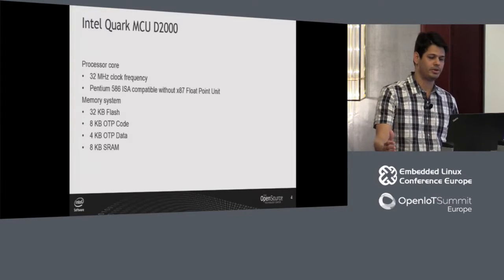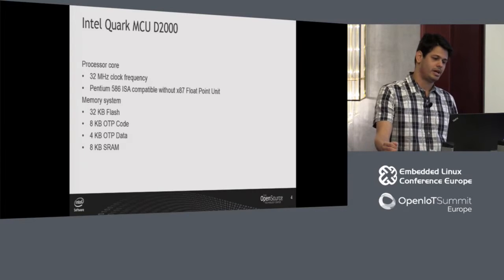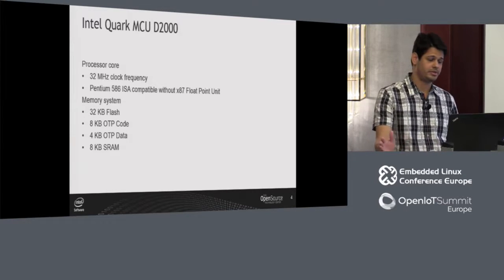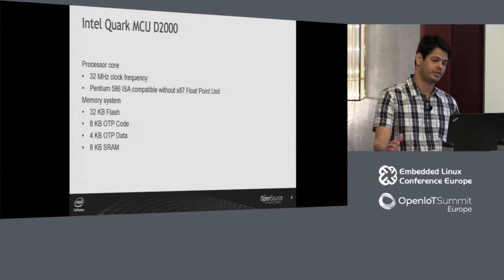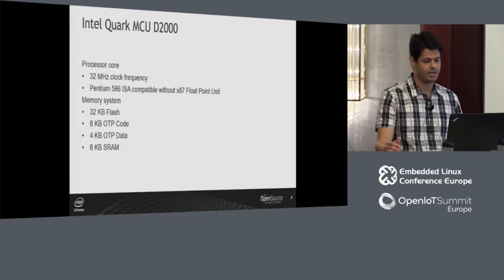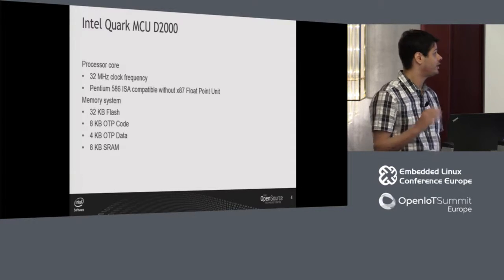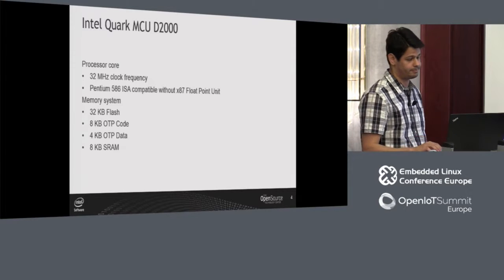For the memory system, it's 32K flash, 8K OTP for code, 4K OTP data, and 8K off-chip RAM.